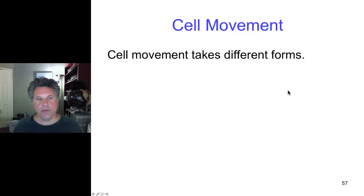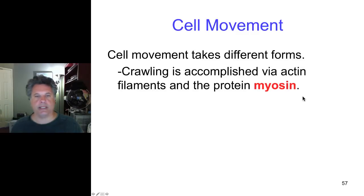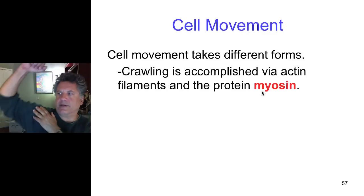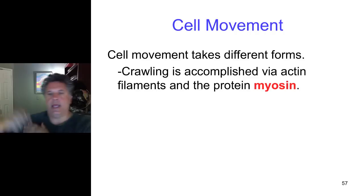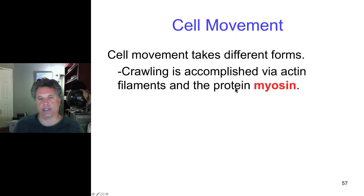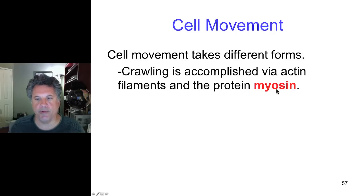Cell movement can take different forms. Crawling can be achieved by actin filaments as well as the protein myosin. When you contract a muscle, you have the protein myosin moving across actin filaments, sliding actin filaments and causing muscle contraction. So myosin can interact with actin filaments and move and slide those actin filaments relative to each other.